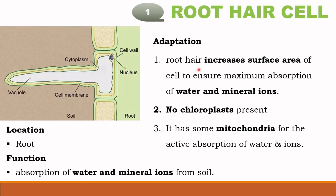Now let's look at plant cells. Root hair cell adaptation: this cell has a finger-like projection and a large vacuole. This large vacuole is helpful to increase the surface area for maximum absorption of water and mineral ions. If you look at this plant cell, you cannot find a chloroplast, because the root hair cell is found inside the soil and there is no need for chloroplast.